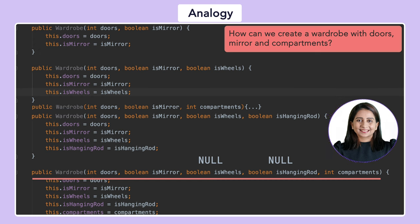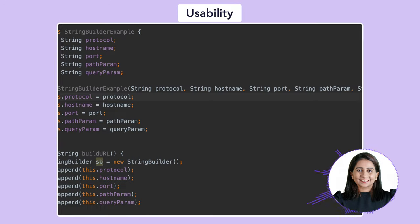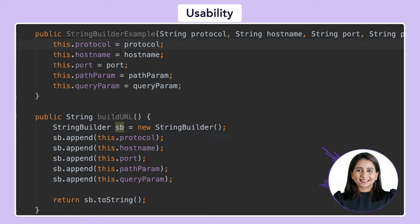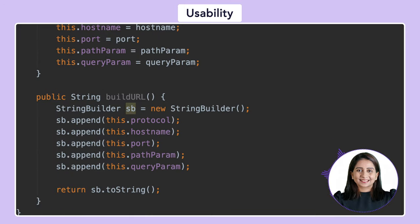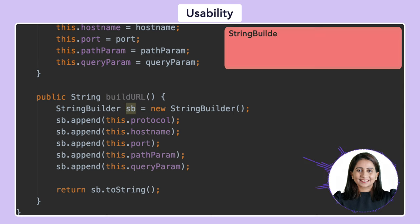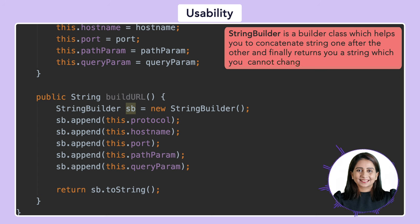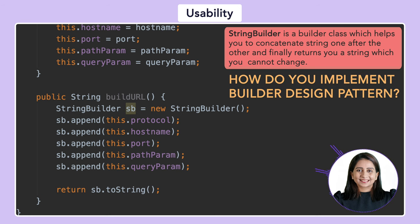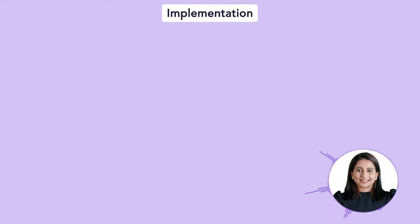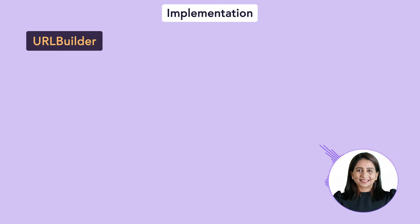Before the code walkthrough, let's understand the difference between implementing a builder pattern versus using one. Many of you have used Java's StringBuilder, where you initialize a StringBuilder, keep appending strings, and finally call sb.toString(). This is utilizing a builder pattern — StringBuilder is a builder class that helps concatenate strings and returns an immutable string. Now let's understand how to implement the builder pattern using a URL builder example.